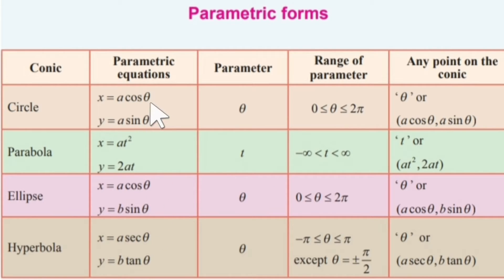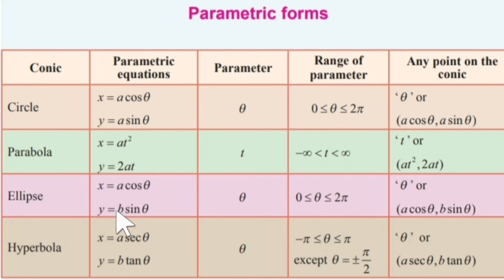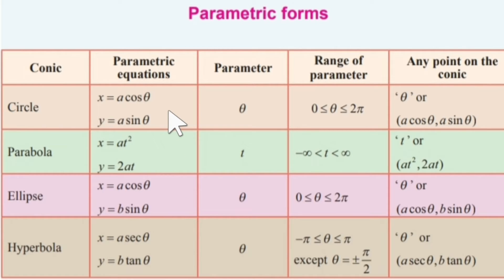Comparing the equations of circle and ellipse: for circle it is a cos theta, a sin theta, and for ellipse it is a cos theta, b sin theta — only the y coordinate differs. If the lengths of the major and minor axes of an ellipse are equal, it becomes a circle.